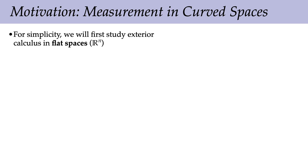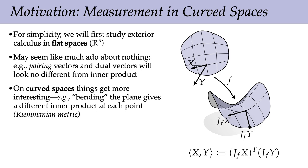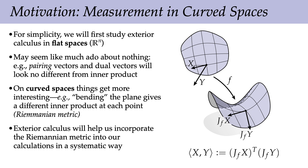For simplicity, we're going to start talking about all these ideas in flat spaces, in Euclidean R^N. For a while it might seem like we're saying redundant things — pairing vectors and dual vectors won't look any different from taking an inner product, and K-forms will sound an awful lot like K-vectors. But once we start talking about curved spaces, things get a whole lot more interesting. For instance, bending the plane into a curved surface gives us an inner product that actually changes from point to point — something called a Riemannian metric. The language of exterior calculus and the duality between K-vectors and K-forms will help us incorporate this Riemannian metric into our calculations in a nice systematic way.